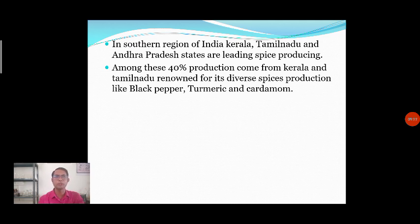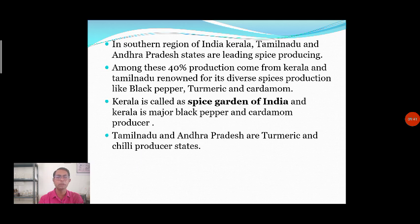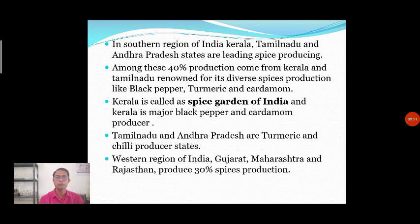About 40% of production comes from Kerala, Tamil Nadu, and other southern parts, including black pepper, turmeric, and cardamom. Due to large-scale production, Kerala is called the 'Spice Garden of India' and is a major black pepper and cardamom producing region. Tamil Nadu and Andhra Pradesh are turmeric and chili producing states — chili is produced maximally in Tamil Nadu, as is turmeric.